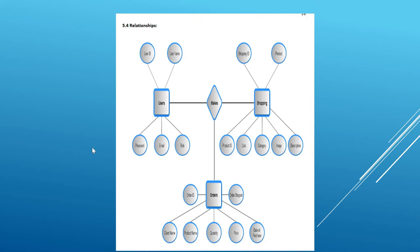Database relationships: Users relationship — user ID, username, password, email, role. Orders relationship — order ID, order ship, client name, product name, quantity, price, date of purchase. Shopping — shopping ID, product ID, cost, category, image, description. There are three main relationships for the site: users, shippings, and orders.